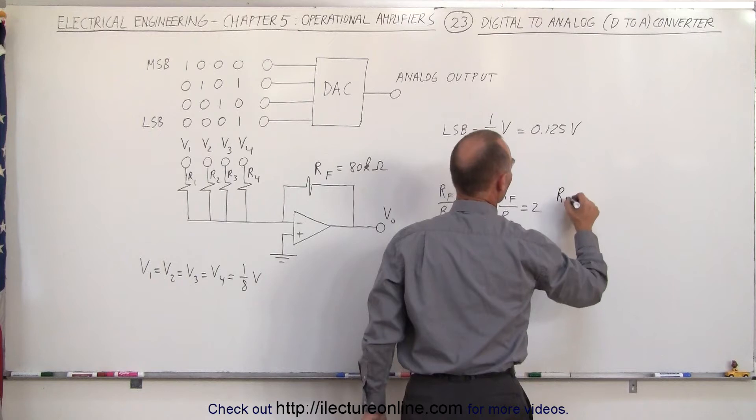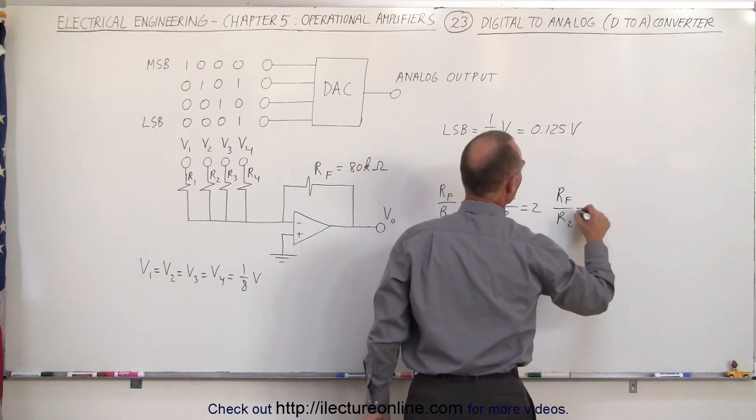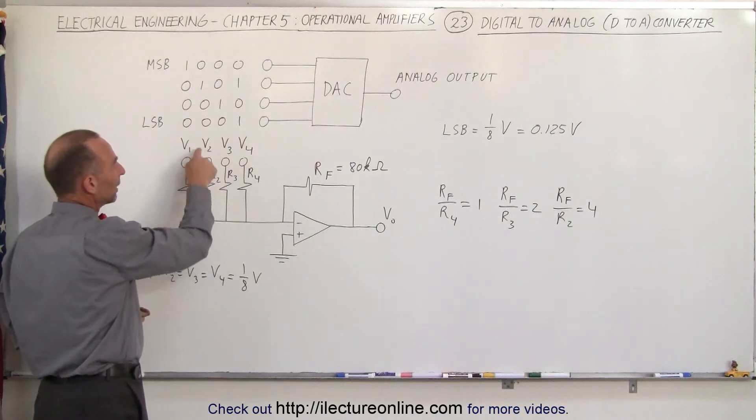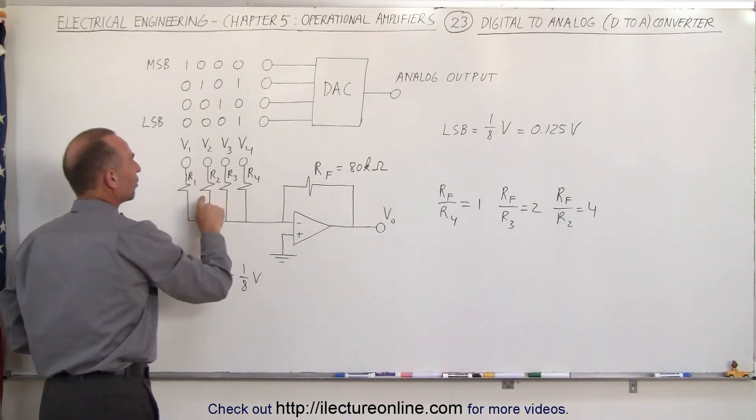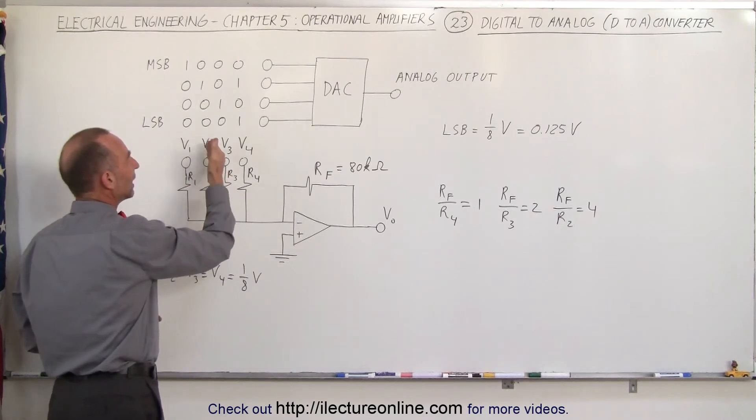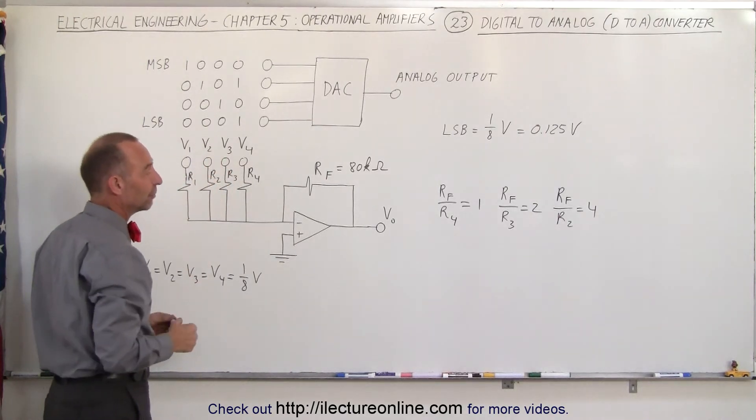If we make RF to R2 equal to four, then if the input on V2 is equal to one eighth of a volt, the four to one ratio of the feedback resistor to R2 will amplify that four times, so one eighth times four will be equal to one half of a volt.